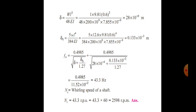fn equals 0.4985 over square root of (delta + delta_s), where delta + delta_s equals 1.28 × 10⁻³ m, so fn equals 0.4985 over square root of (1.28 × 10⁻³), giving fn equals 43.3 Hz. The whirling speed equals 43.3 rps × 60 equals 2598 rpm.